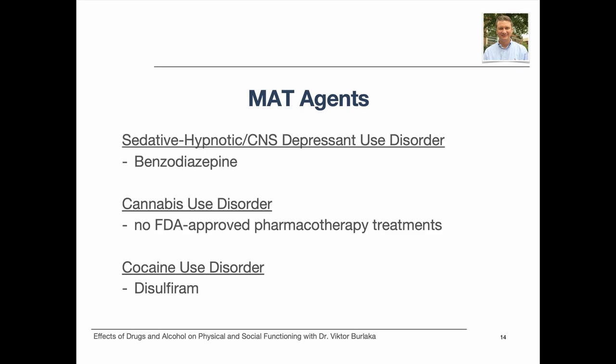As with alcohol withdrawal, opioid withdrawal can be complicated and potentially deadly, and the process may best be managed with close medical supervision. Benzodiazepine is used in medication-assisted treatment of CNS depressant disorder. There are currently no FDA-approved pharmacotherapy treatments for cannabis use disorder. For cocaine use disorder, disulfiram and amantadine have been used to treat withdrawal symptoms, and bupropion, topiramate, and psychostimulants also have some evidence of effectiveness on cocaine abstinence.